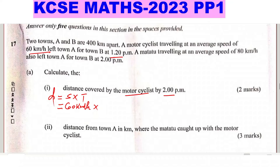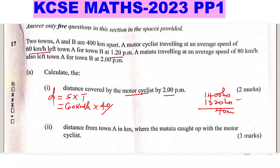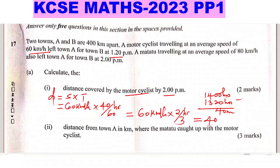2 PM is the same as 14:00 hours and 1:20 PM is 13:20 hours, so the difference is 40 minutes. We need the distance covered from 1:20 PM to 2 PM, which is 40 minutes. We convert 40 minutes to hours by dividing by 60, giving 2/3 of an hour. So: 60 km/h × 2/3 = 40 kilometers.